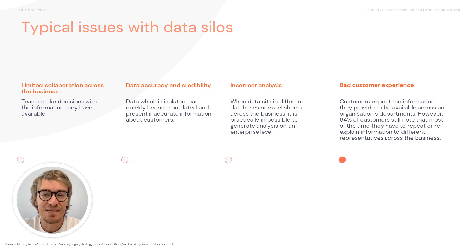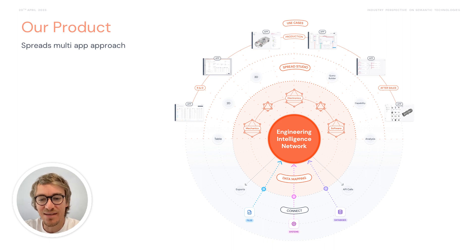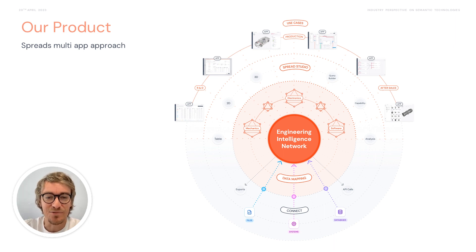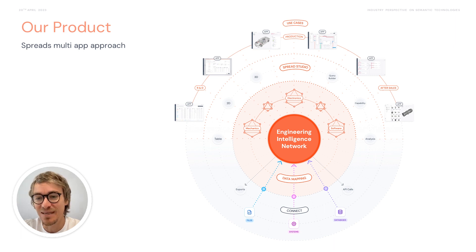Here you see our product and our approach. We have different layers. We always start from a business case and look at the data you have at hand. Then we connect this data and bring it together in our Engineering Intelligence Network — on one hand a labeled property graph and other data storages depending on the data at hand. On top of it there's a GraphQL interface, which is basically the contract towards the application layer. For the application layer we use something called Spread Studio, a low-code environment which allows us to quickly build applications with UI elements, giving a quite unique experience in combination with the data we get.